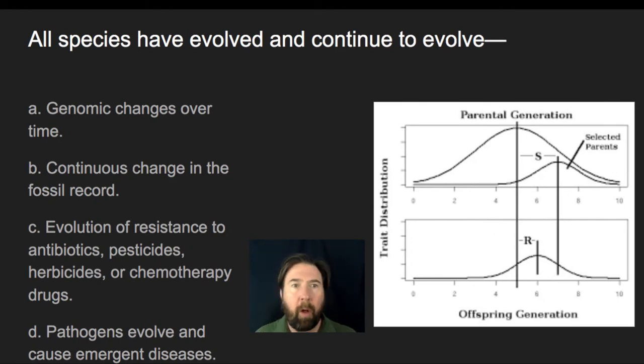So again, all species have evolved and continue to evolve, and we know that there are genomic changes that take place over time. Those genomic changes are going to occur from both internal forces, such as mutations, and the fact that certain alleles are going to be selected for because individuals with those alleles survive and reproduce over time.